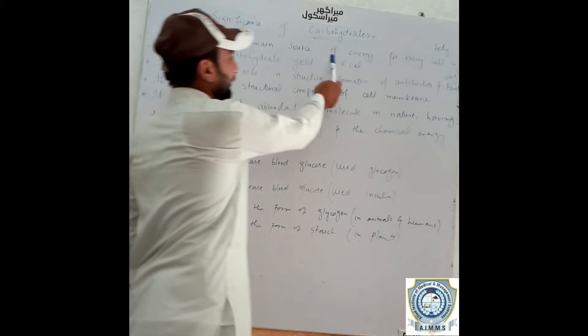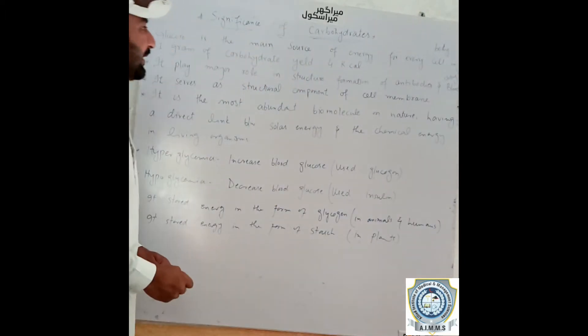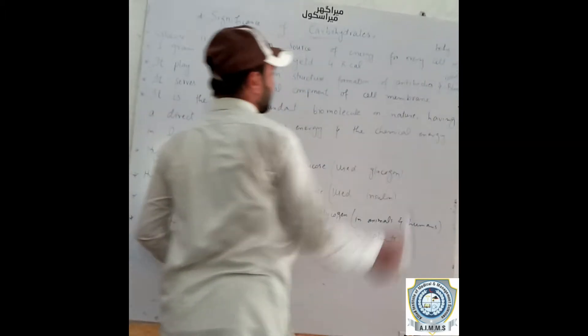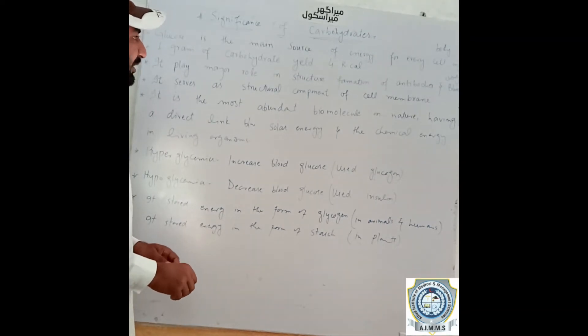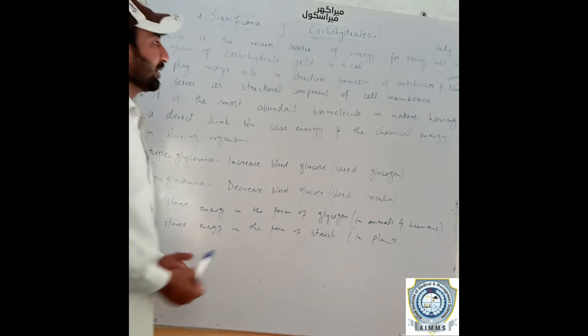Glucose is the main source of energy for living cells. The human body uses carbohydrates as the main source of energy, providing 4 kilocalories per 1 gram of carbohydrate.